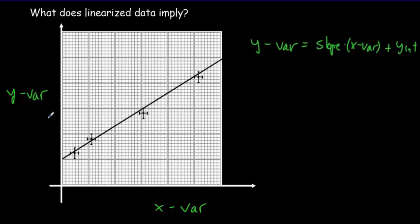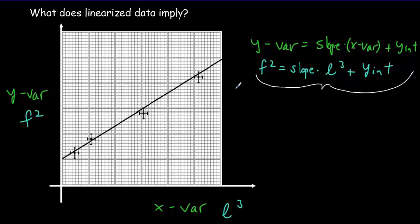But this y variable might be some quantity cubed or the square root of some quantity. Let's say it was the square of a frequency and the x variable was the cube of some length. Then our equation in terms of the experimental variables would be that f squared, the y variable, would equal the slope of the graph times the x variable plus the y-intercept. So what we've got here is an equation to fit the data.